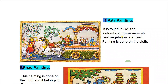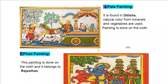Number 4: Pata Painting. It is found in Orissa. Natural color from minerals and vegetables are used. Painting is done on cloth. There is also a painting that belongs to Rajasthan, done on cloth.